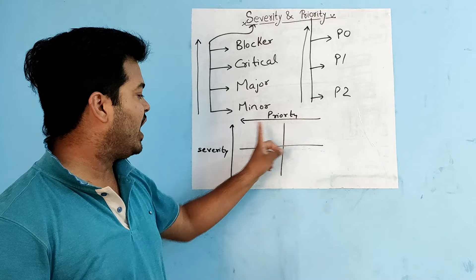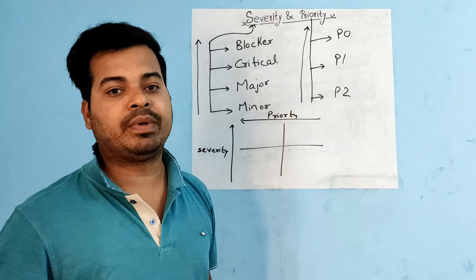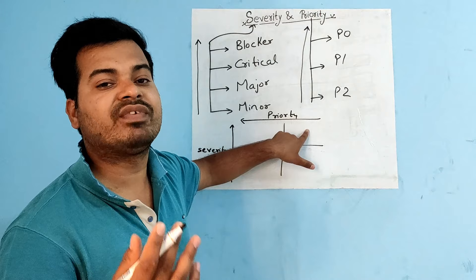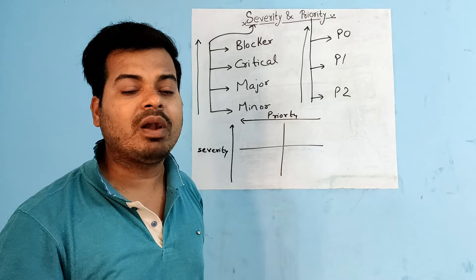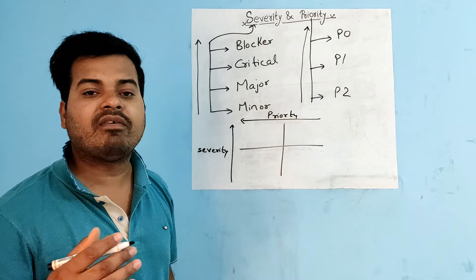Example of high severity and low priority: suppose your application has an 'About Us' link, and when you click on it, it goes to a blank page. That is high severity — a blocker — but it is not critical to fix it immediately since it is not impacting the main customer business workflow. So the priority would be P2 — it can be fixed in upcoming releases, allowing developers to utilize their time elsewhere.